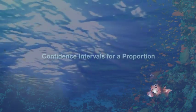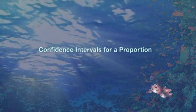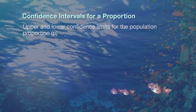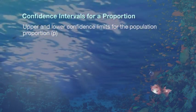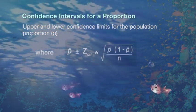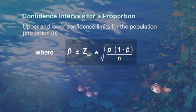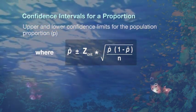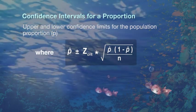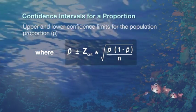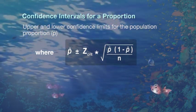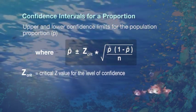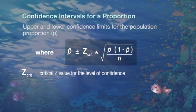So now that we know how to calculate the standard error for the proportion, how do we find the confidence interval for the proportion? The upper and lower limits for the population proportion can be calculated using the following formula. This is actually derived from lecture 6 where we use the transformation z formula, and rearranging that gives us this version. Z-critical is what we call the critical value of z for the level of confidence chosen for a particular problem.